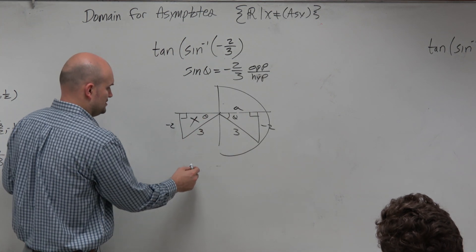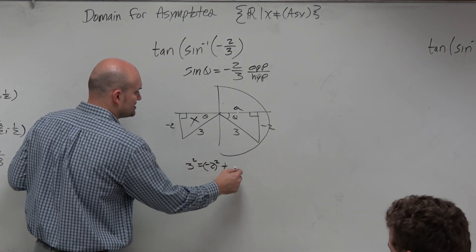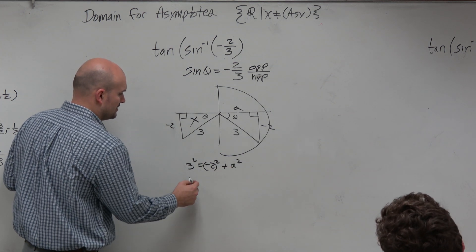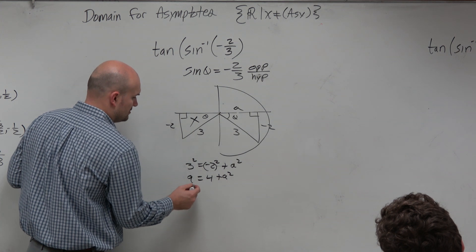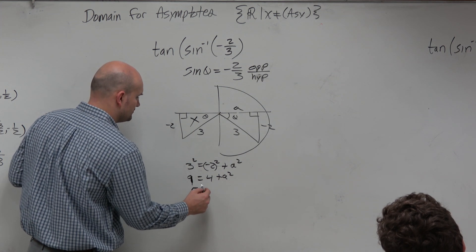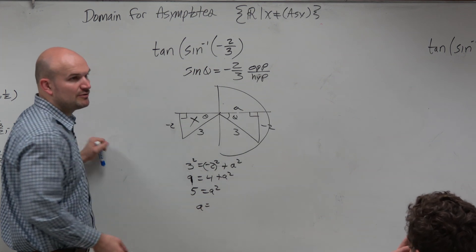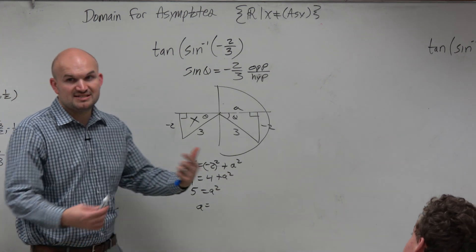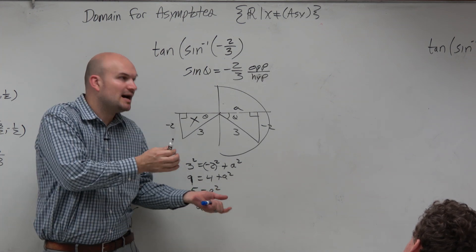So let's just call that A. OK, so I'll do 3 squared equals negative 2 squared plus A squared. 9 equals 4 plus A squared. 5 equals A squared, and then A equals... Now, I could write plus or minus square root of 5, but since we now know where this triangle is, we know that it's going to be positive square root of 5.